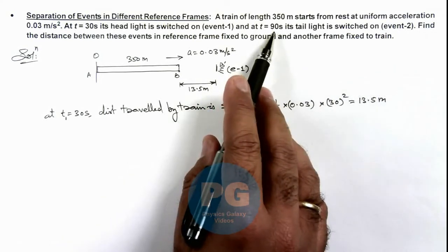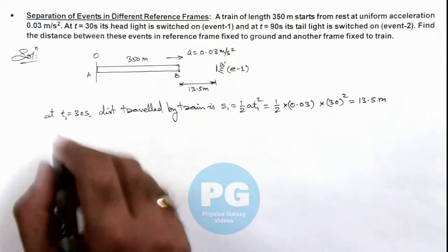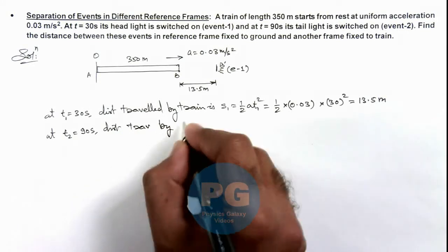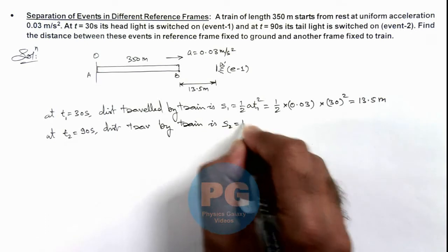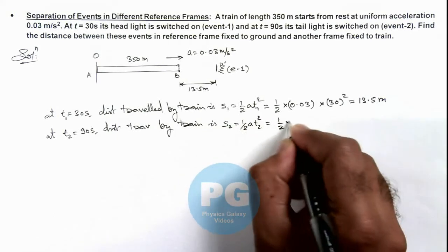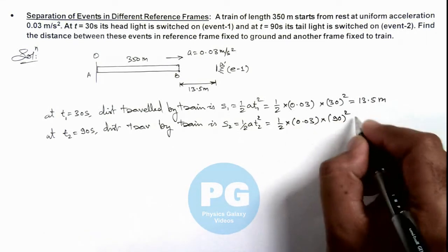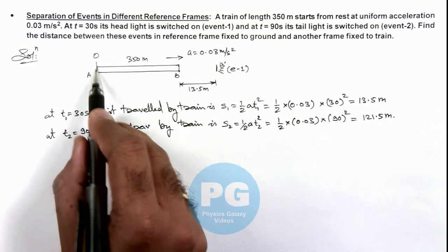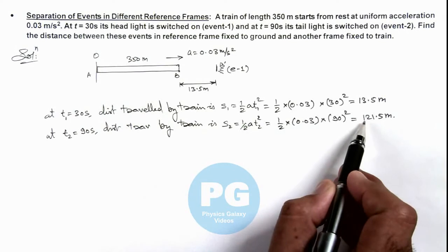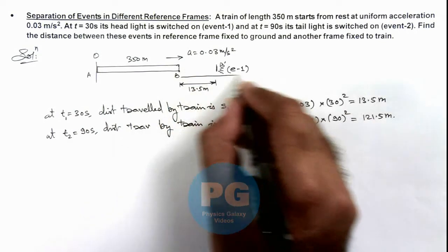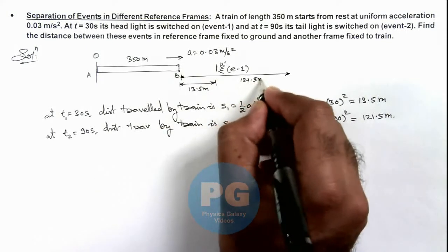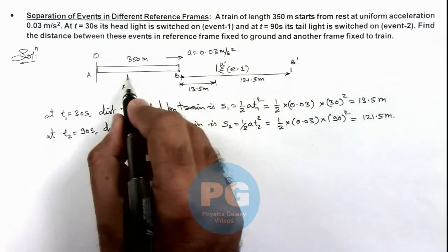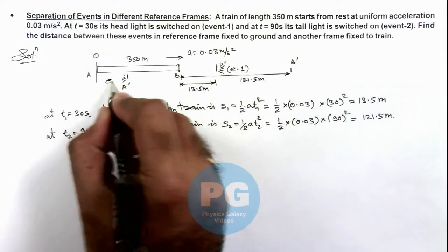Now after 90 seconds, that is 60 seconds after Event 1, the tail light is switched on. So at t2 equal to 90 seconds, the distance travelled by the train is s2, which is half a·t2 squared — half multiplied by 0.03 multiplied by 90 squared — giving us 121.5 meters. That means the front end of the train will also be at a distance of 121.5 meters from the initial point, where B prime is, and somewhere here A prime is. At this location the total train length is 350 meters, and the tail light is switched on, which we call Event 2.